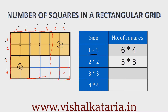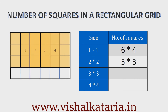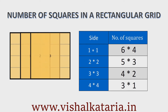Now for 3 by 3 squares: along the length we can fit a maximum of 4, and along the width we can fit 2. So the total is 4 multiplied by 2, which is 8. For the 4 by 4 squares, there will be 3 along the length and only 1 along the width, giving us 3 multiplied by 1, which equals 3. That's how we find the number of squares of different sizes in a rectangular grid.